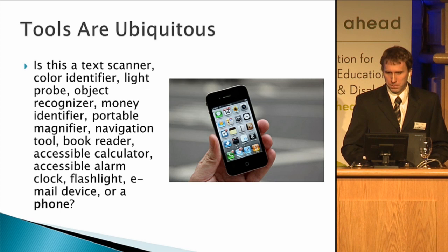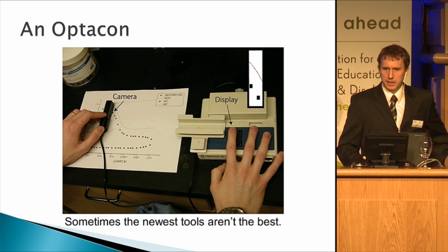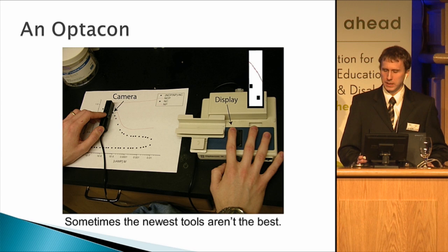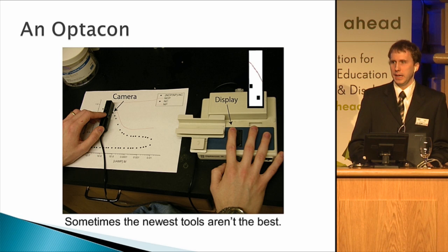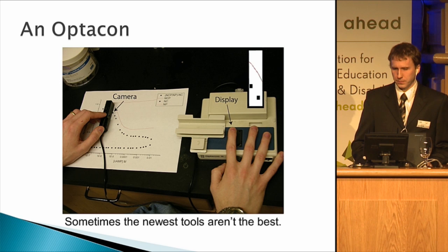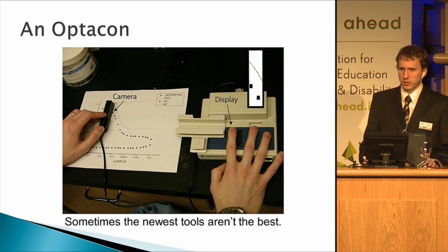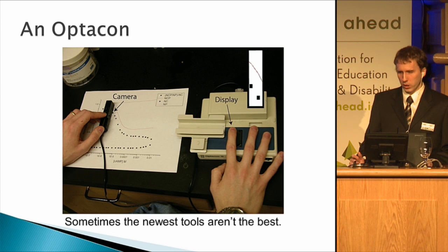Sometimes the newest tools aren't the best. This is an Opticon, designed in the 1970s around when I was born. What it does is take the image through a small postage-stamp-sized camera and make a pin display vibrate according to what it sees in black and white. When it came to organic chemistry class, I realized I needed to interpret line spectra and drawings of chemical structures. So we reached back into the archives, asked around, thought about techniques, and with willingness decided to try this. This tool, which is in some ways incredibly simple but older, was the tool we needed for the job.